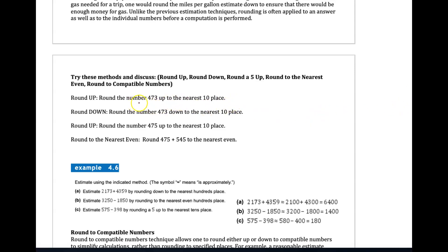Round the number 473 up to the nearest ten place—that becomes 480 because we're rounding up. Round down to the nearest ten place, and this would be 470. Sometimes we round up to overestimate, and sometimes we just want to estimate to the closest number. Round 475 up to the nearest ten place, and that would be 480.